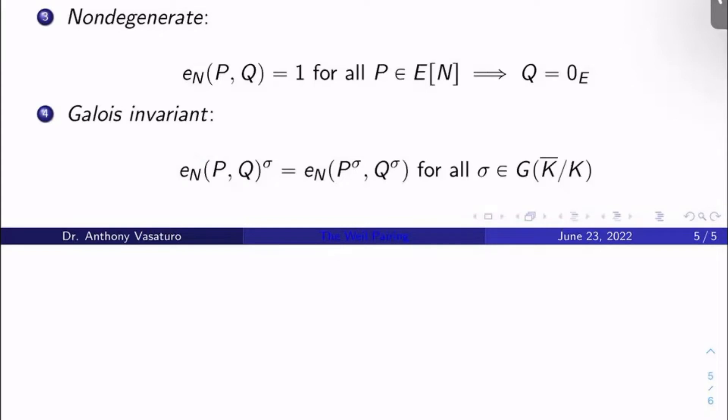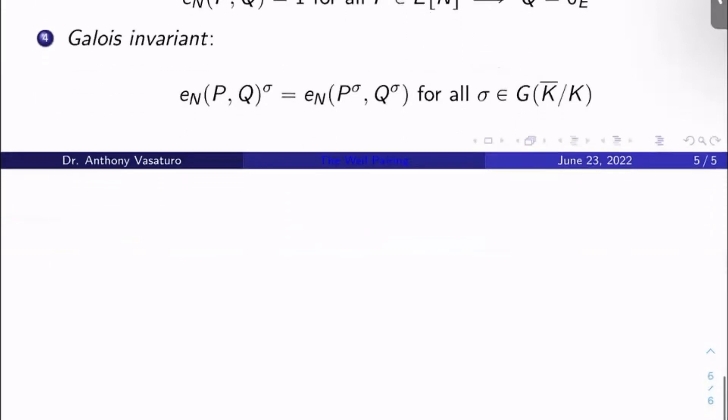One last thing that I didn't write here, the Weil pairing is also isomorphism invariant, right? So if I have an isomorphism of elliptic curves, the Weil pairing is preserved by that isomorphism. So what I mean by that is like e_N(P,Q) is the same as e_N(φ(P), φ(Q)), where φ is an isomorphism of elliptic curves over K, let's say. All right, so next time we'll get into a little bit of algebraic geometry. I'll talk about the curves, fields, correspondence. We'll need that when we go to try to construct modular curves, not as complex curves, but as algebraic curves over Q. So thanks for watching, and I'll see you then.